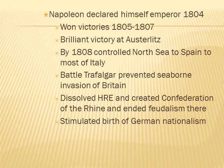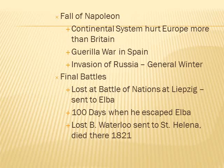Napoleon declared himself emperor in 1804 and won victories from 1805 to 1807. His brilliant victory at Austerlitz established his reputation as a military genius. By 1808 he controlled from the North Sea to Spain to most of Italy. At the Battle of Trafalgar he was defeated, preventing a seaborne invasion of Britain — all thanks to Horatio Nelson. He dissolved the Holy Roman Empire and created the Confederation of the Rhine, ending feudalism there. French nationalism also stimulated the birth of German nationalism.